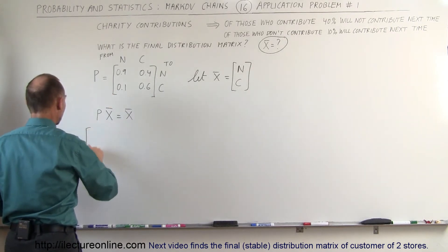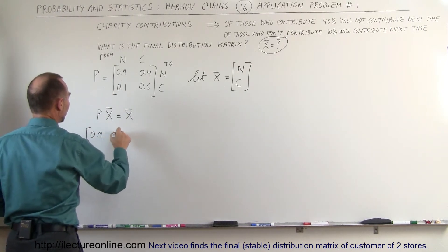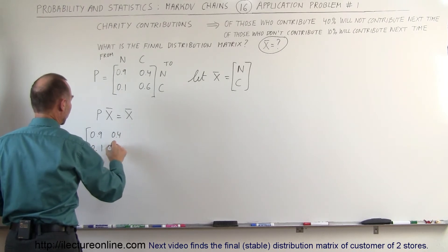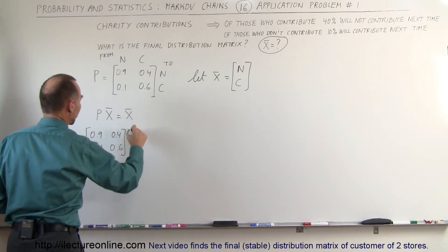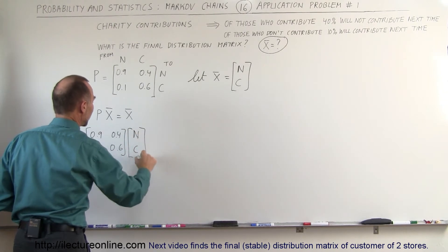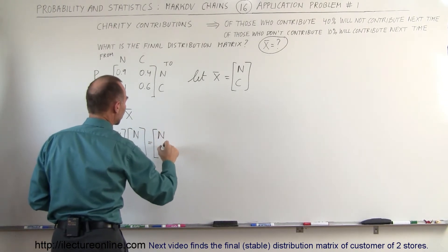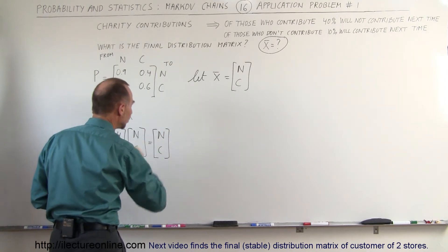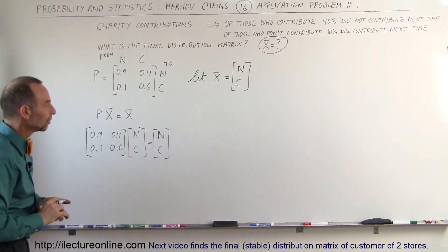So we take our matrix, which is 0.9, 0.4, 0.1, and 0.6, and we multiply that times the not contributing and contributing states, and that should then equal the not contributing and contributing states. So these will be equal to each other when we reach the stable state.